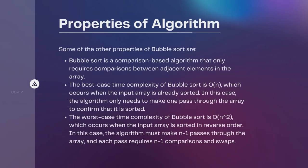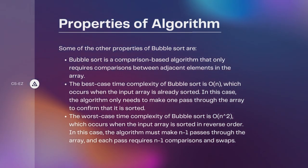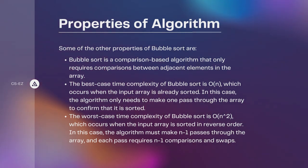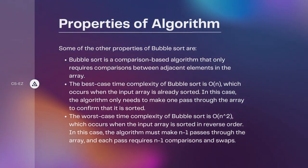Now let's discuss some of the properties of the algorithm. Bubble sort is a comparison-based algorithm that only requires comparisons between adjacent elements in the array. The best case time complexity of bubble sort is O(n), which occurs when the input array is already sorted. In this case, the algorithm only needs to make one pass through the array to confirm that it is sorted.